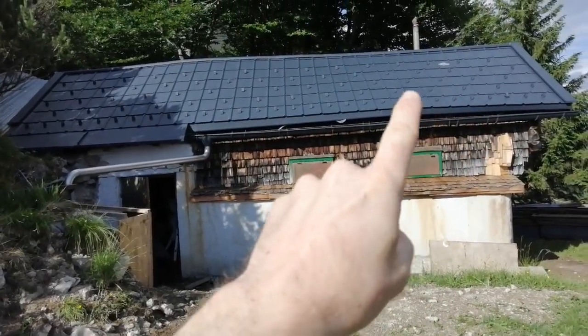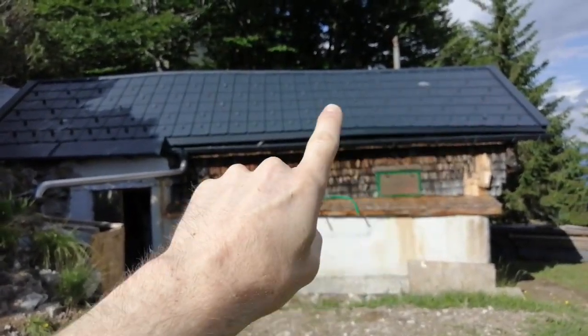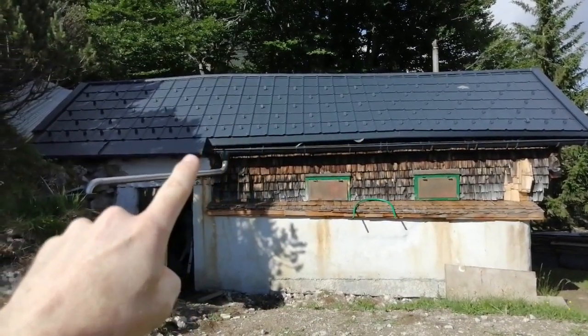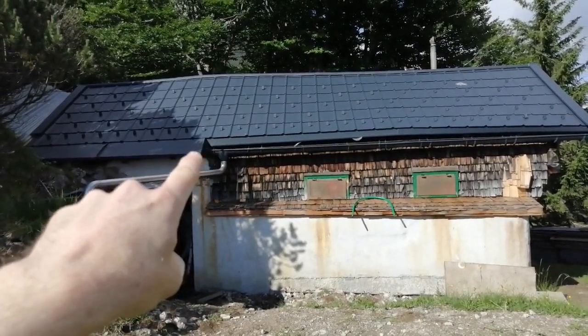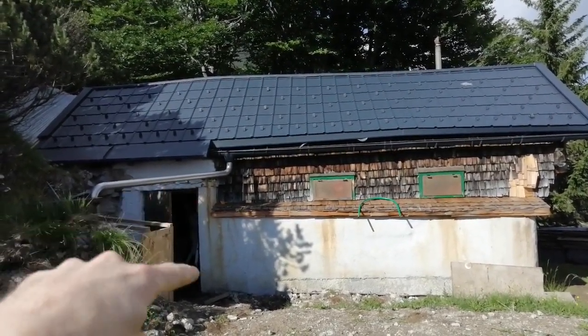We also need electricity for the pump for the water project. The idea is to have a PV panel somewhere here and then have the cables on this side, but I think shorter is better. So on this side, under the roof somewhere, and then go into the shed here because we want to have all the battery stuff and everything inside here.